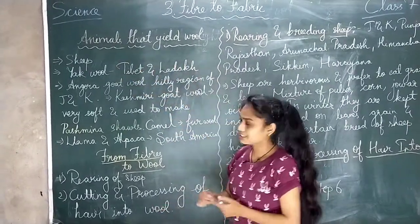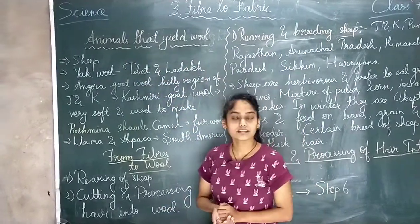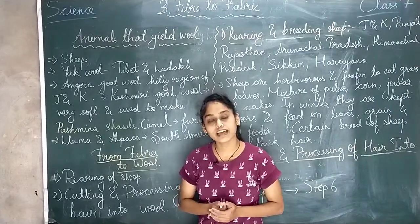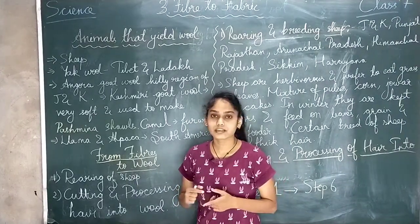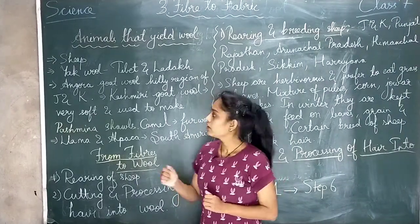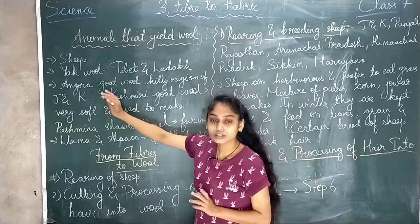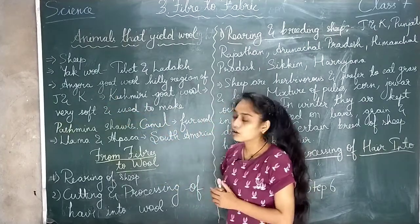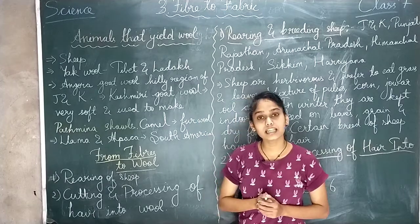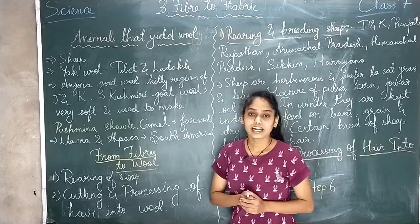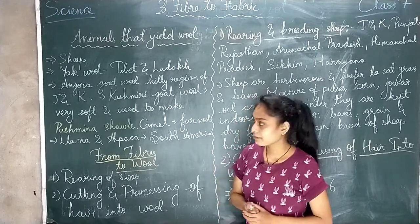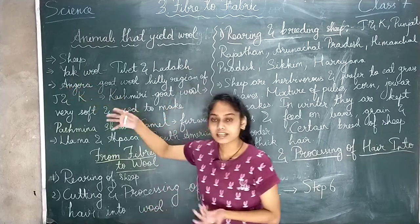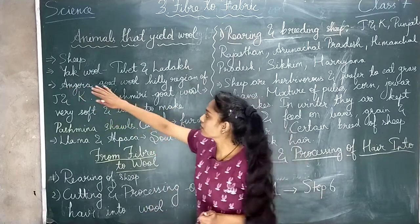Animals that yield wool include goat, lamb, and camel. We also get wool from sheep. The yarn is mostly found in regions like Tibet and Ladakh. We also get wool from Angora goats found in the hilly regions of Jammu and Kashmir.